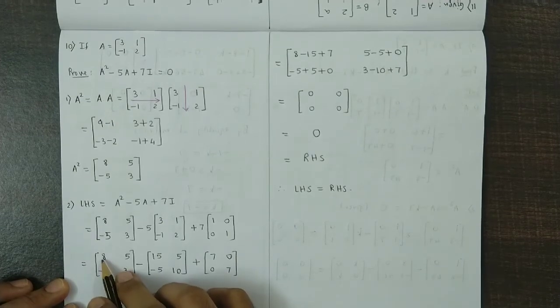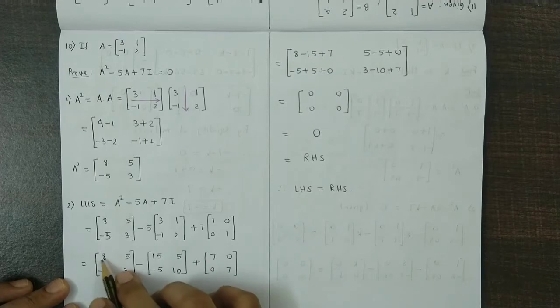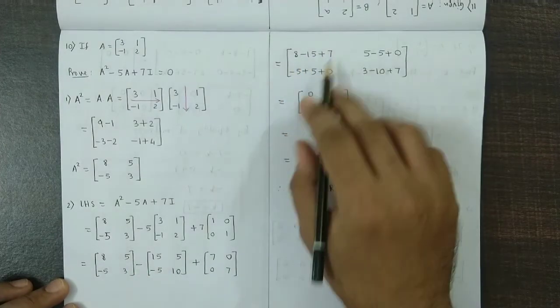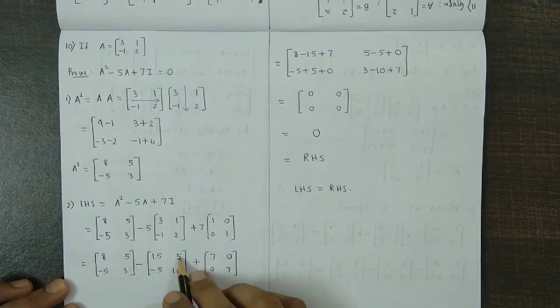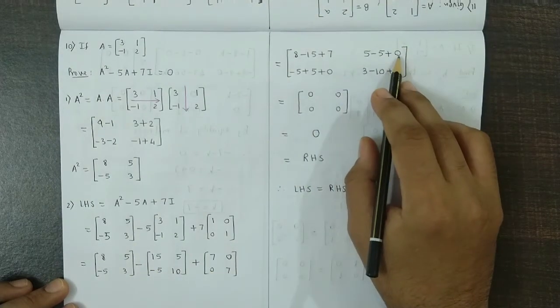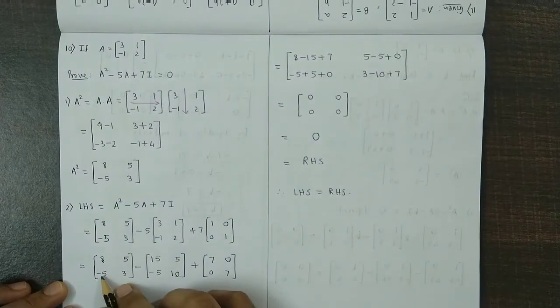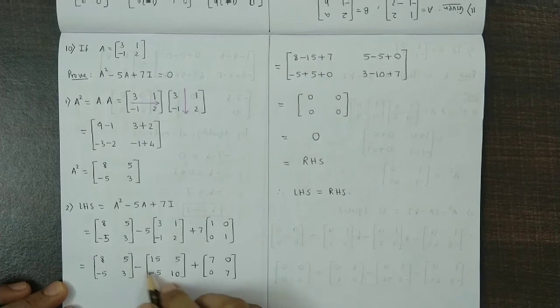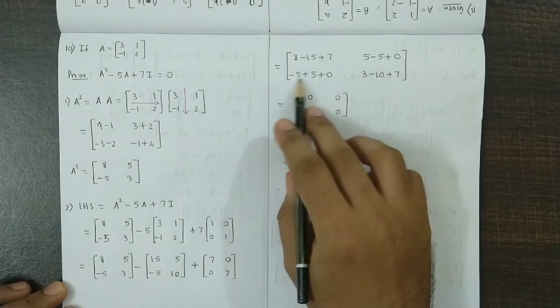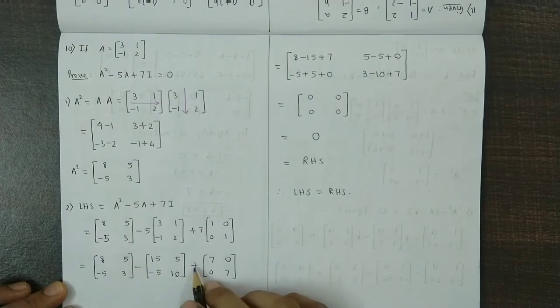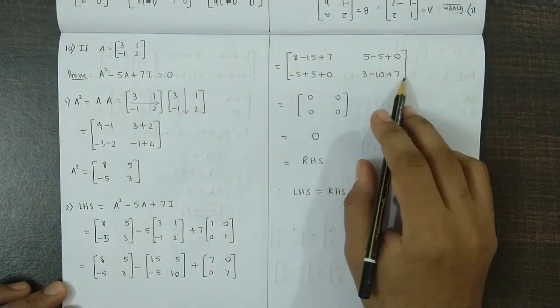So finally what we get is 8 minus 15 plus 7 for the first term. Next would be 5 minus 5 plus 0. Then minus 5 plus 5 plus 0. And then 3 minus 10 plus 7.